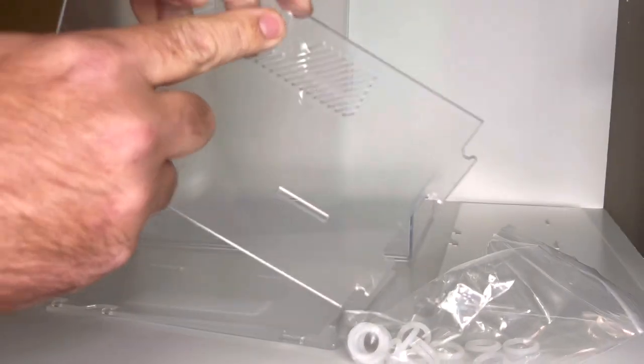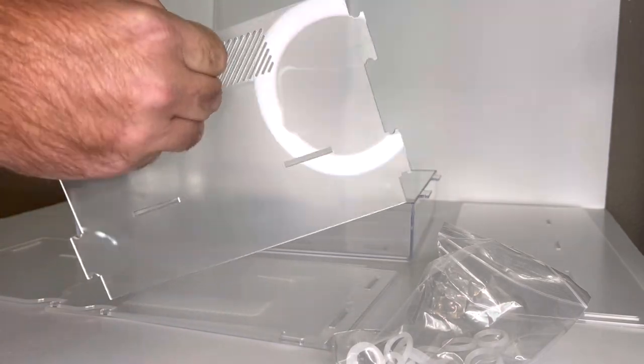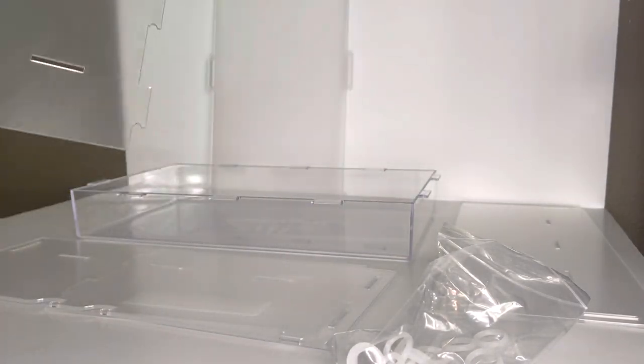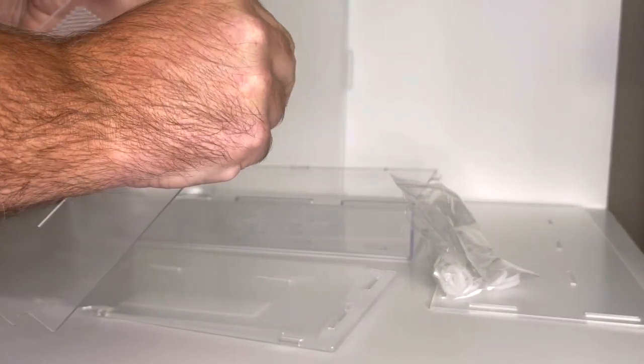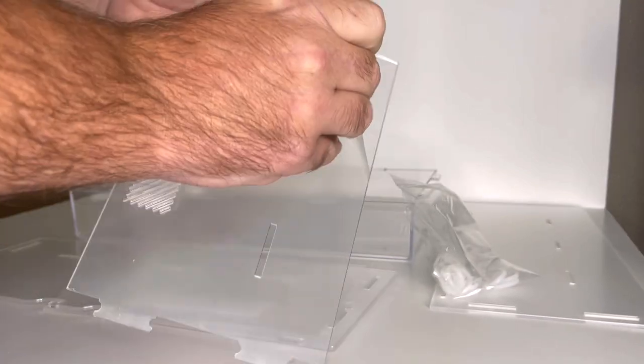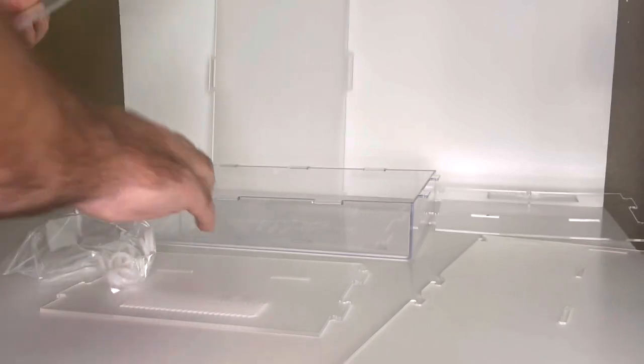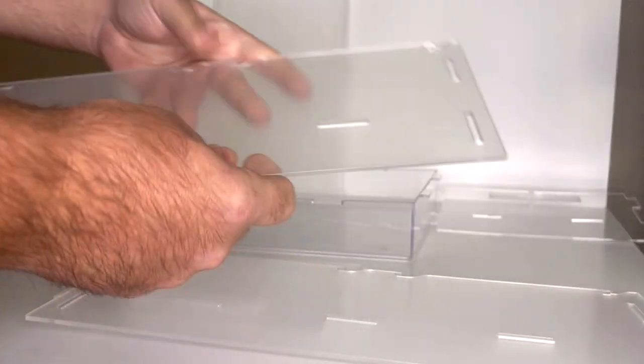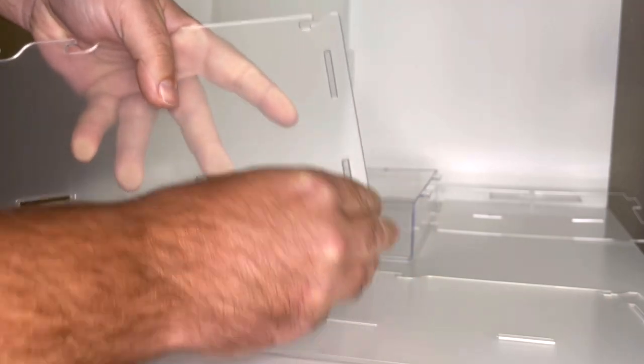Now we're going to go ahead and put this part in. It's important to put this in the right piece, the right panel at the right position. There's two holes there, you're going to want to insert it into the top hole. I find it's easier just to wiggle it back and forth a little bit to get it to pop in there.